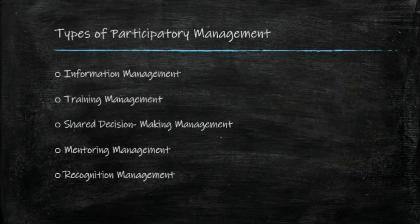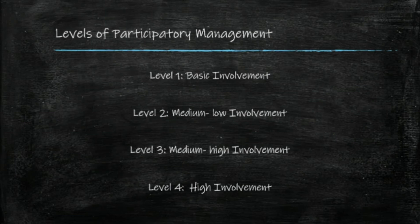Next, the types of participatory management. There are mainly five types: information, training, shared decision making, mentoring, and recognition. Next, the levels of participatory management. The first level is basic involvement, the second is medium-low involvement, the third is medium-high involvement, and the fourth is high involvement.